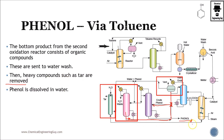Heavy compounds such as tar are removed — this is important. From the reaction section, the bottoms contain a lot of impurities, mostly tar. So we send them to the scrubber, add water, tar is removed, and now the water-phenol rich stream is ready to be recycled.